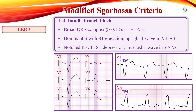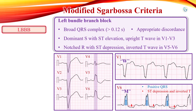In left bundle branch block, there is appropriate discordance, as abnormal ventricular depolarization is followed by abnormal repolarization. This means in leads with a positive QRS complex, ST segment depressions and T wave inversions can be observed. Similarly, in leads with a negative QRS complex, ST segment elevations with positive T waves can be observed. ST segment deviation does not necessarily indicate ischemia — it can occur even in the absence of myocardial ischemia.